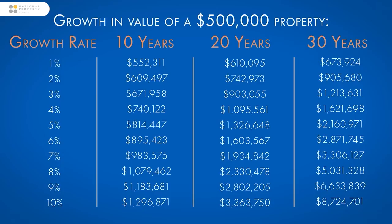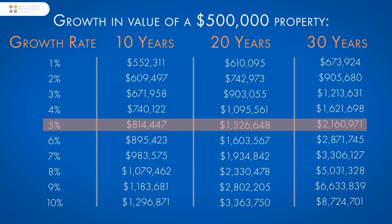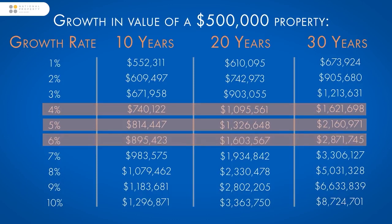These are extreme examples of course, but there are many suburbs around Australia that have had double-digit growth rates over the last 20 years. However, the average growth rate of every suburb across Australia over the last 20 years is estimated to be around 5% per annum. If over the next 20 years your investment property achieves just 1% under the national average and your brother-in-law achieves just 1% above average, he would earn over half a million dollars more net profit than you — a bit of a pill to swallow at family barbecues. That's the difference between 4% and 6% growth over 20 years, and even small differences in growth rates mean huge differences in profit when measured over the long term.